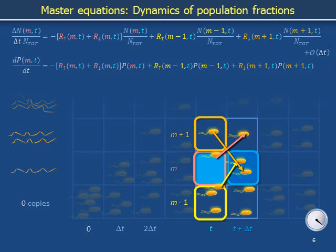Master equations express the dynamics of the population fraction of a state of interest in terms of transport into that state from and transport out of that state to other states. Products between rate coefficients and population fractions appear in the individual terms in master equations because the amount of transport from a state depends both on whether there are any cells in that state to begin with and, if so, what fraction of these cells actually jumps to another state. How often does a doctor see patients? This depends both on how many people are in the waiting room and on what fraction of those people are called to see the doctor each hour.